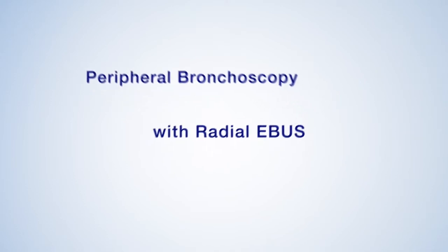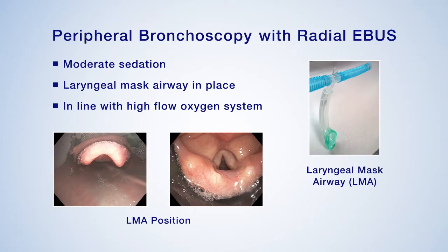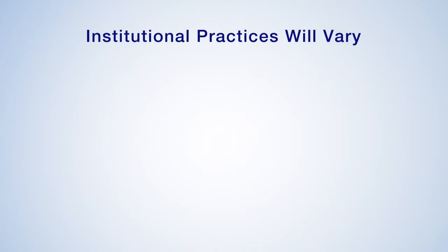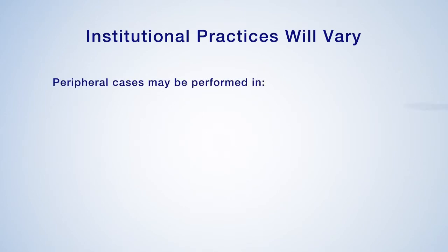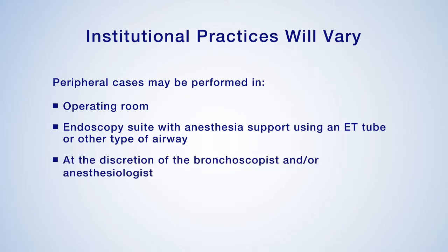This procedure will be performed using moderate sedation with the laryngeal mask airway in place, in line with the high flow oxygen system. Institutional practices will vary and peripheral cases may alternatively be performed in an operating room or endoscopy suite with anesthesia support using an endotracheal tube or other type of airway, at the discretion of the bronchoscopist and/or anesthesiologist. Peripheral bronchoscopy using radial ebus may be performed in different ways depending on the individual case as well as the comfort level and experience of the bronchoscopist.